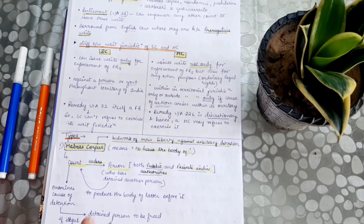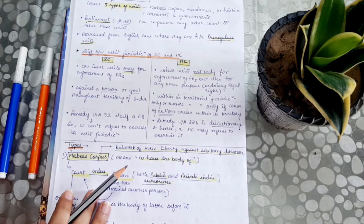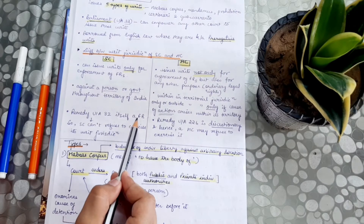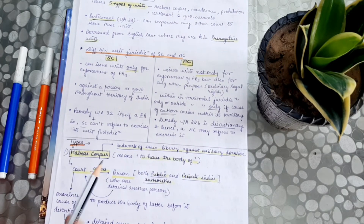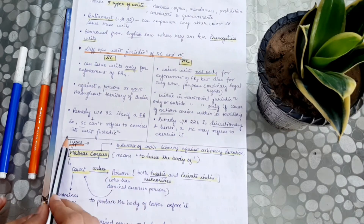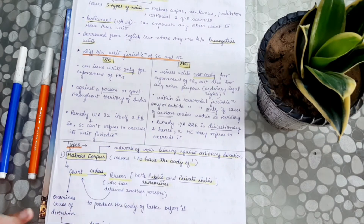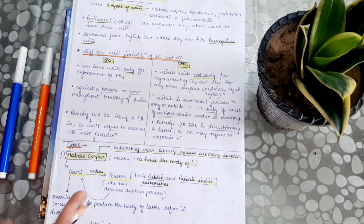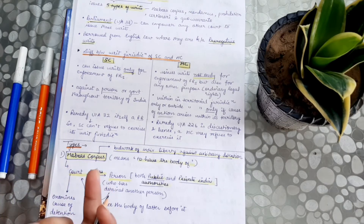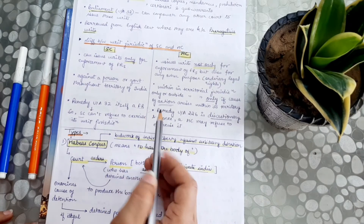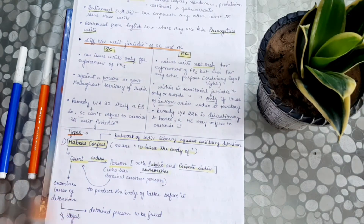The third basic difference is that the Supreme Court's writ jurisdiction under Article 32 is itself a fundamental right, so the Supreme Court cannot refuse to exercise its writ jurisdiction. But in the case of the High Court, this remedy is provided under Article 226, which is not a fundamental right. So, the power of the High Court is discretionary — the High Court can refuse to exercise its power. The discretionary power is with the High Court.